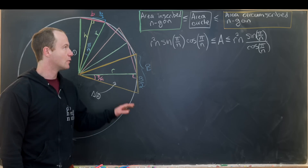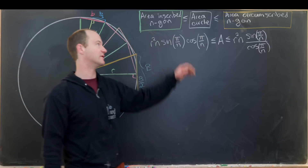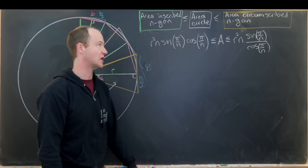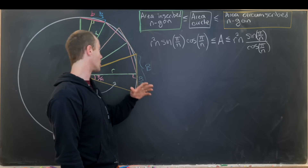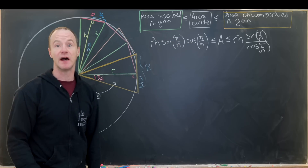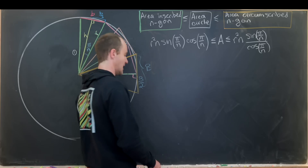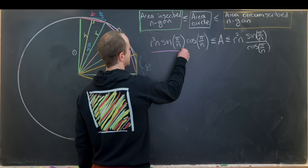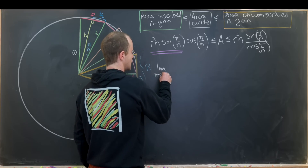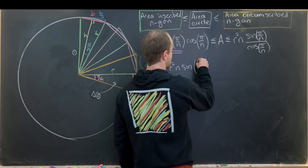To summarize: we've approximated the area of the circle between the area of an inscribed n-gon and a circumscribed n-gon, expressed both in terms of n, r, and trig functions. Now we'll take the limit of both sides as n goes to infinity, show they approach the same value, which means the area of the circle equals that value. Let's start with the inscribed n-gon: the limit as n→∞ of r² · n · sin(π/n) · cos(π/n).